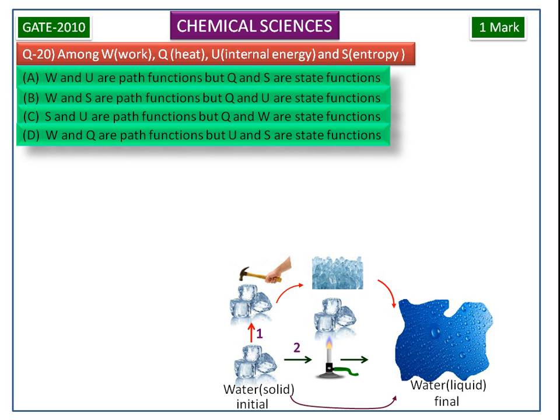We can follow any of the paths to obtain the final state. Each path involves multiple states, results in different values, that is, different work done and different heat involved at different times.